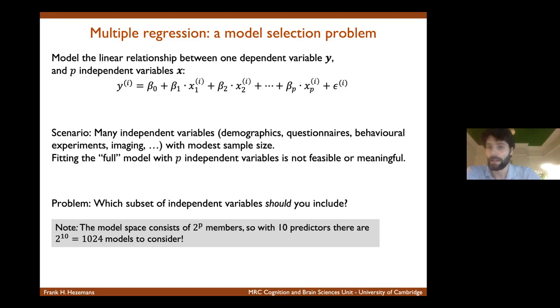Of course, in some cases, you already have a very clear hypothesis or theoretical background that determines what model you should use. But more often than not, you're not quite sure what model to use here. And this is not a trivial problem because the number of model variants scales up quite drastically with the number of potential predictor variables. So for example, if you have 10 predictor variables, there are already more than a thousand models to consider.